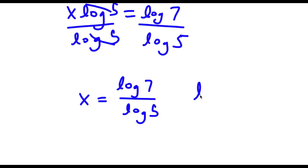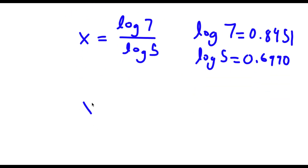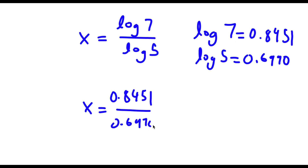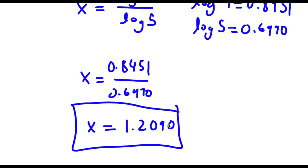Now log 7 is equal to 0.8451, and log 5 is equal to 0.6990. So now I have 0.8451 over 0.6990, which is equal to approximately 1.2090. So this is my answer.